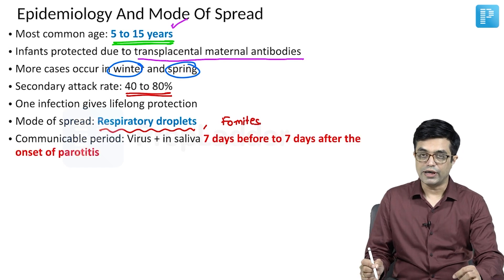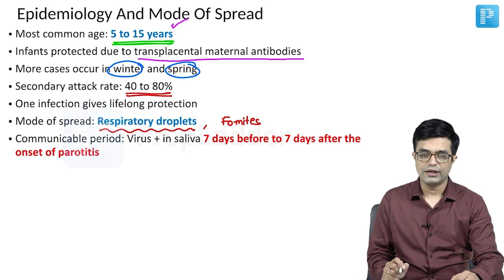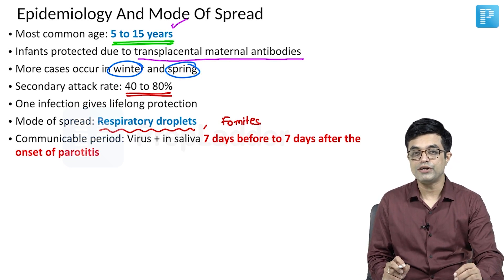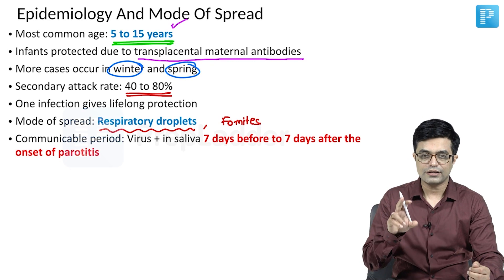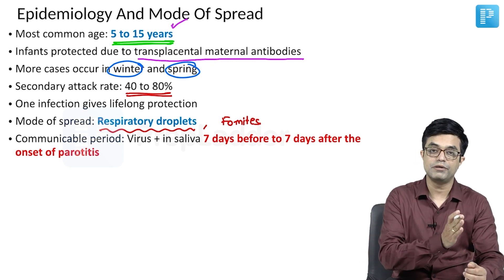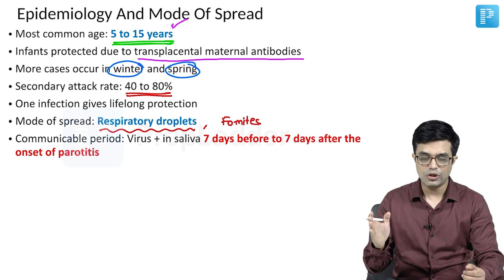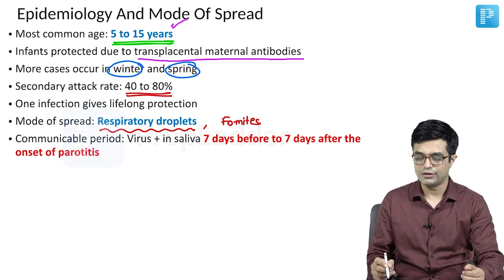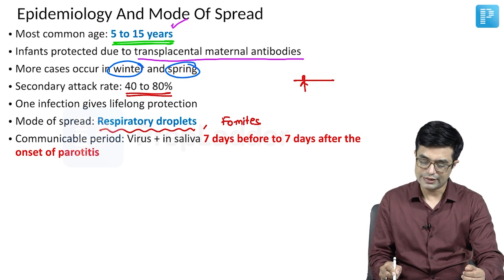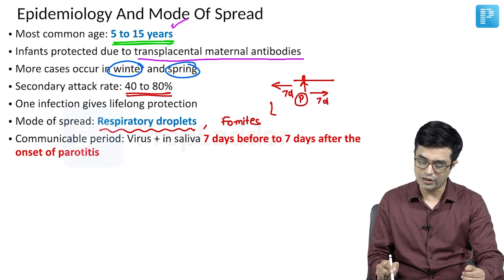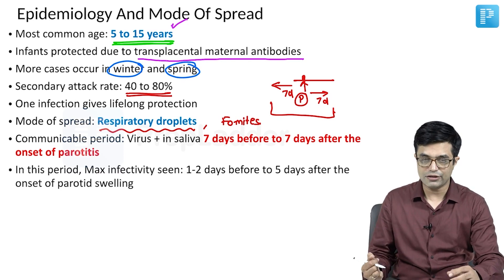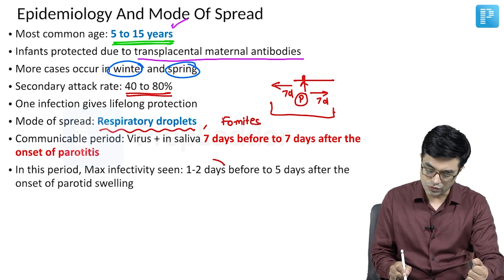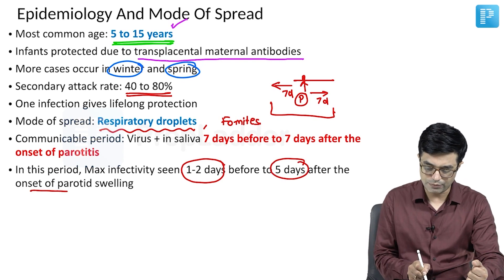The communicable period is variously given in various books. Nelson states the overall communicable period is when the virus is secreted into the saliva — from 7 days before the onset of parotitis to 7 days after the onset of parotitis. Within this period, the danger period of maximum transmissibility is 1 to 2 days before to 5 days after the onset of parotid swelling.